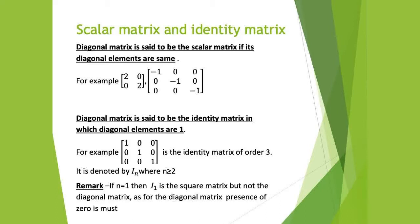Here n is greater than or equal to 2. This means n cannot take the value 1. I am clarifying this: if n equals 1, then I_1 is a square matrix — if we take n as 1, the matrix that comes out has no 0 in it. But for a diagonal matrix, the presence of 0 is a must. That's why if we take the matrix I_1, that is a square matrix, but we cannot say that it is also a diagonal matrix.